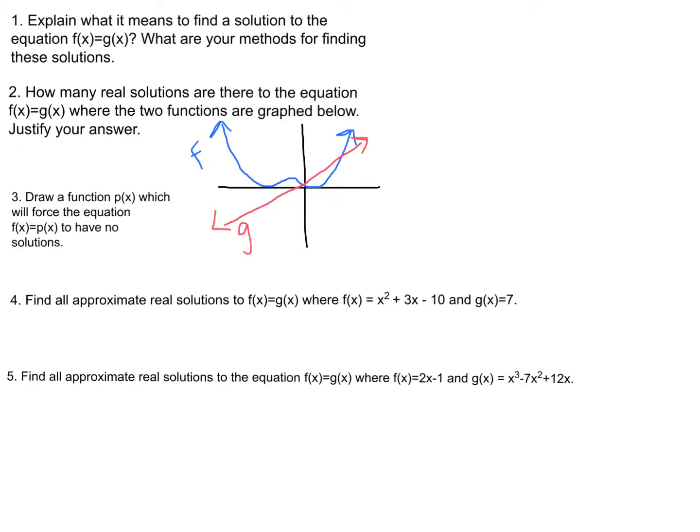We want to draw a function which will force the equation f of x equals p of x to have no solutions. In other words, f of x can never intersect with p of x. So if I'm drawing a function, maybe I draw a function like this because f of x will always be positive and this p of x would always be negative.